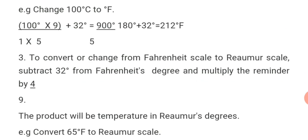Now, to convert or change from Fahrenheit scale to Réaumur scale, subtract 32 degrees from the Fahrenheit degree and multiply the remainder by 4 over 9. The product will be the temperature in Réaumur degrees.